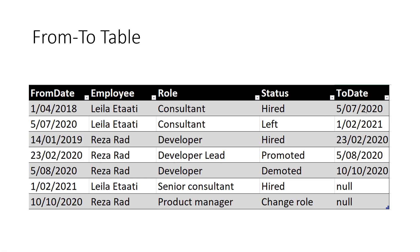I still have other records as well. If there is a period where that status is the most up-to-date status, I have the to date as null. In some practices, people use a very far future date as the to date, such as 31st of December 9,999. That would work conceptually, but in Power BI, if you use the default date table, that would create a huge date table, which I wouldn't recommend. I have another article about that — the link is in the description below. I would suggest keeping that as null instead.